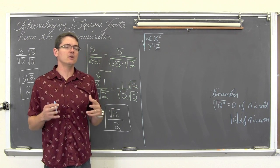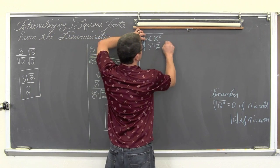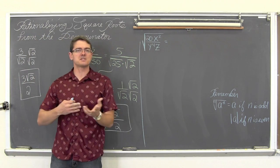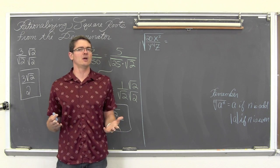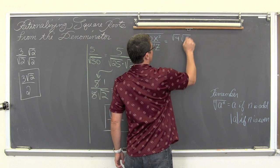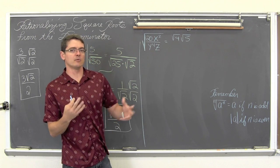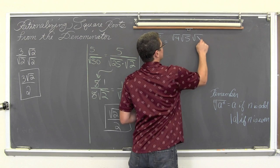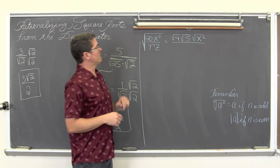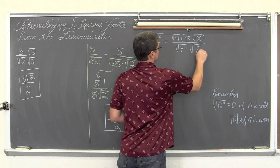If you are not sure how to simplify this, watch my video on Simplifying Square Roots with Variables. I have got 20 in the numerator — there is a perfect square in 20. I can write it as the square root of 4 times the square root of 5. Then we have the square root of x squared in the numerator, and in the denominator the square root of y to the fourth and the square root of z.